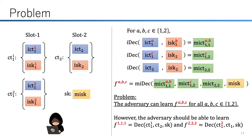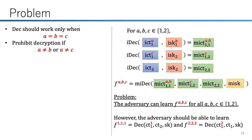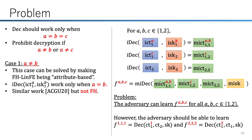We can allow decryption when A equals B equals C. So it is sufficient to prohibit decryption if A does not equal B or A does not equal C. We deal with the former case using the technique of attribute-based encryption: we embed the information of A and B into the ciphertext and secret key respectively, and allow decryption only when A equals B. We constructed such an attribute-based function-hiding linear FE from pairings. Attribute-based linear FE was also considered by ACZU-20, but they do not consider the function-hiding property, so this is also a new result of our work.